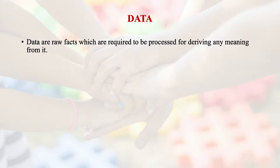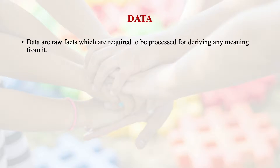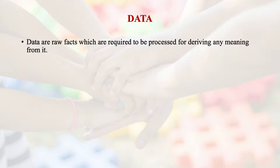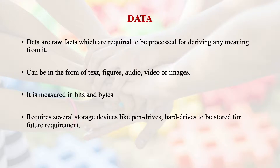Data are the raw facts which are required to be processed for deriving any meaning from them. Raw data doesn't make any sense on its own. The raw data has to be processed through technology, and it can be in the form of text, figures, audios, videos, or images — but they have to be placed properly to give meaning to that data. Usually, data is measured in bits and bytes and requires several storage devices like pen drives and hard drives to be stored for future requirements.